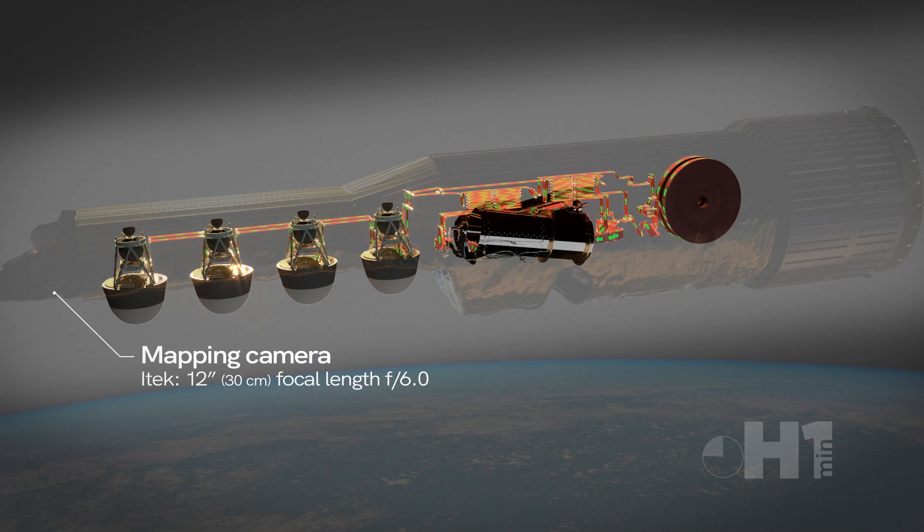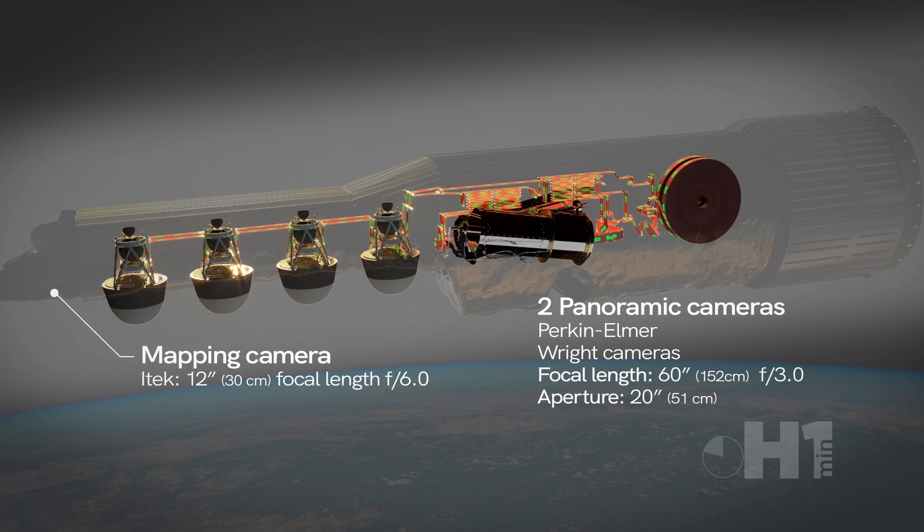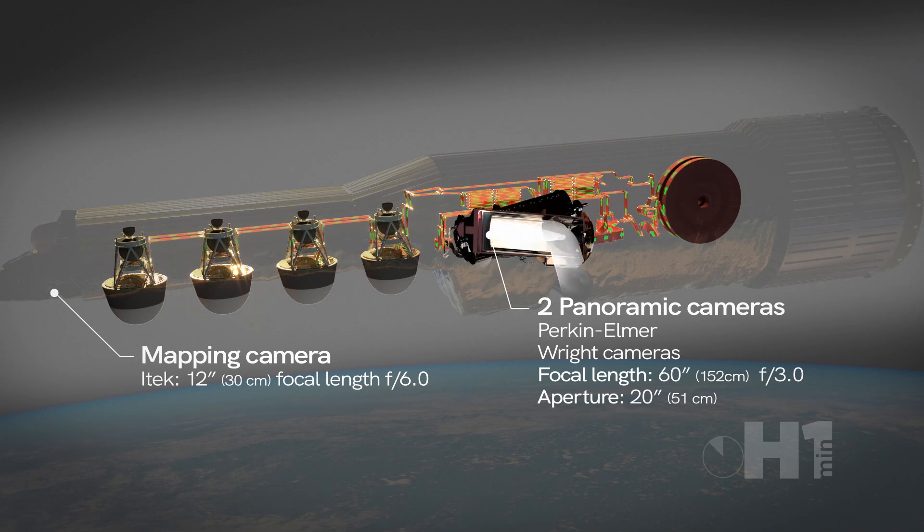Later versions included an additional mapping camera. They contained two Wright cameras designed by Perkin Elmer and worked at a range of 80 to 370 nautical miles.